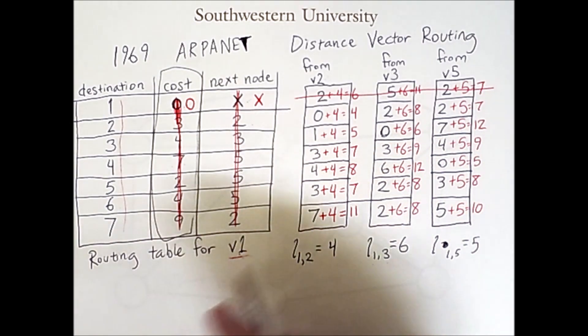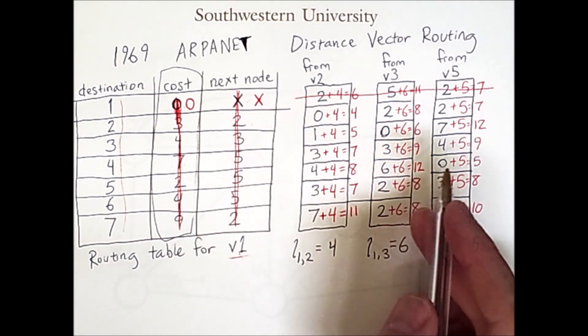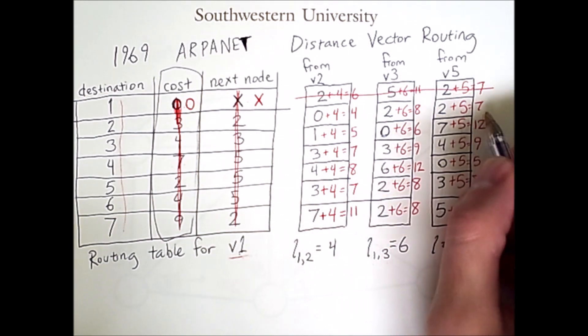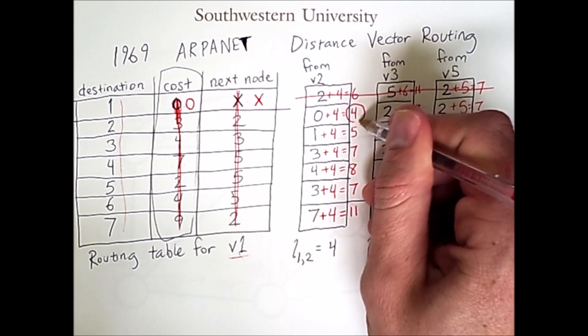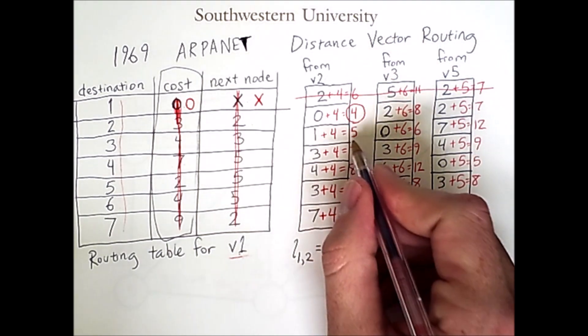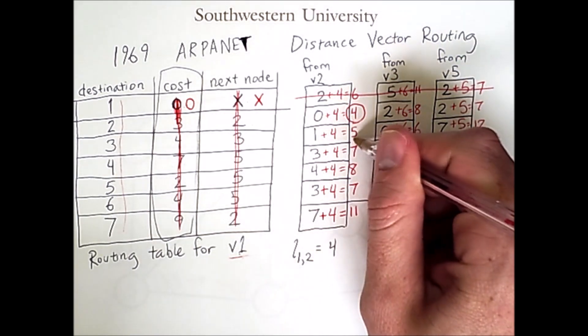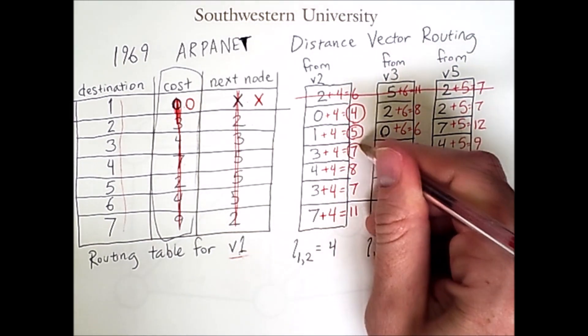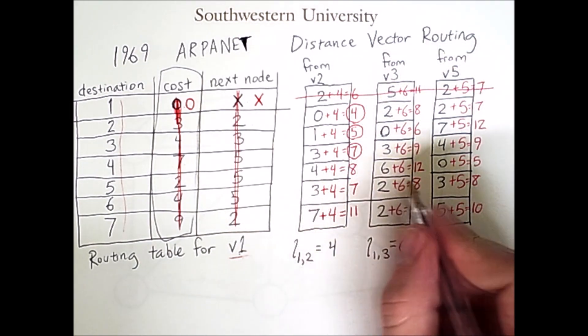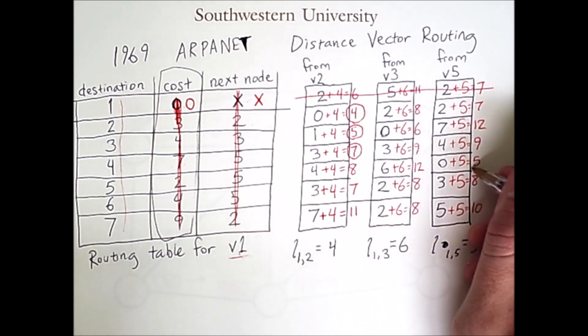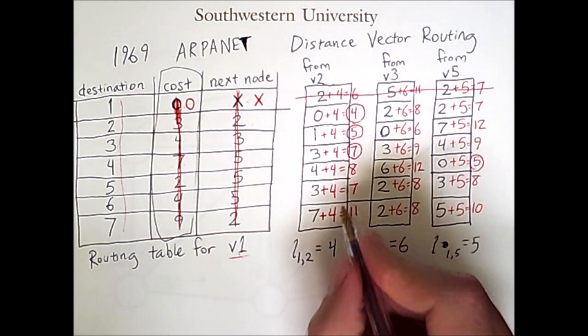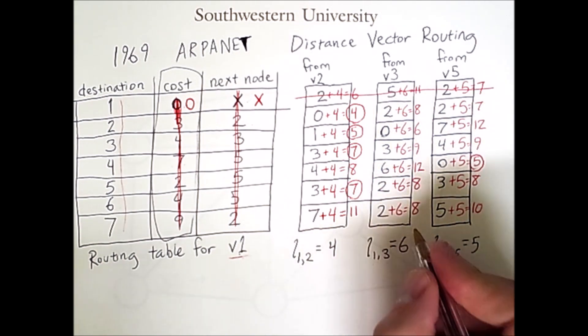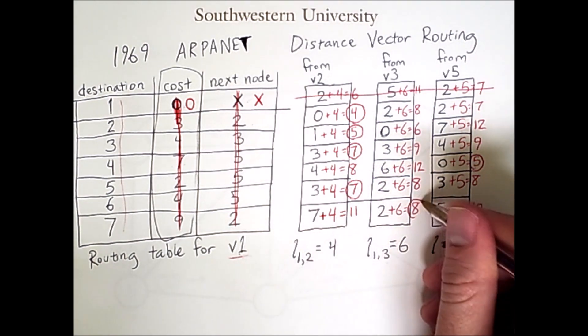What we're going to do for each row is find the minimal value. So for this row, we have 4, 8, and 7. 4 is the minimum. Here, 5, 6, 12. 5 is the minimum. 7, 9, 9. 7 is the minimum. 8, 12, 5. 5 is the minimum. 7, 8, 8. 7 is the minimum. 11, 8, 10. 8 is the minimum.